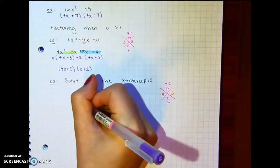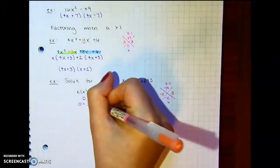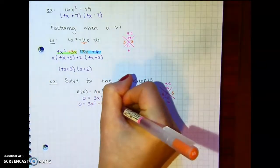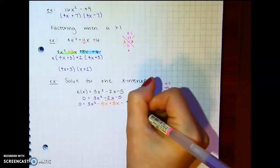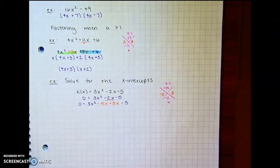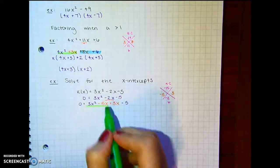So I'm going to replace this negative 2. Make sure you bring everything down so it's nice and organized. So minus 5x plus 3x minus 5. Okay, then we factor by grouping.